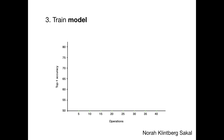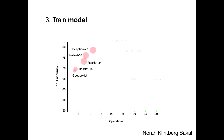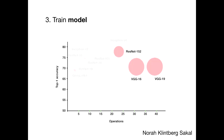Choosing a neural architecture — there are a lot of different models out there, from smaller ones with very few operations to larger ones with many operations. The one I used is called VGG16. Why? Because it's a fairly simple and straightforward architecture, it's easy to understand, easy to play around with. And also because I had a pretty small dataset.